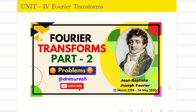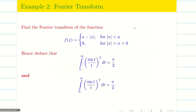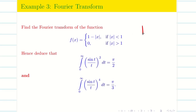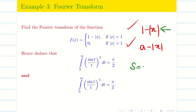In part 2 we solved an important problem on a - |x|. For the deductions we put a = 2, s = t, ds = dt to achieve the results. The next problem used 1 - |x|. Though students may think both are the same, the deduction is slightly different — there is no 'a', so we put s = 2t, ds = 2 dt to achieve deductions 1 and 2.